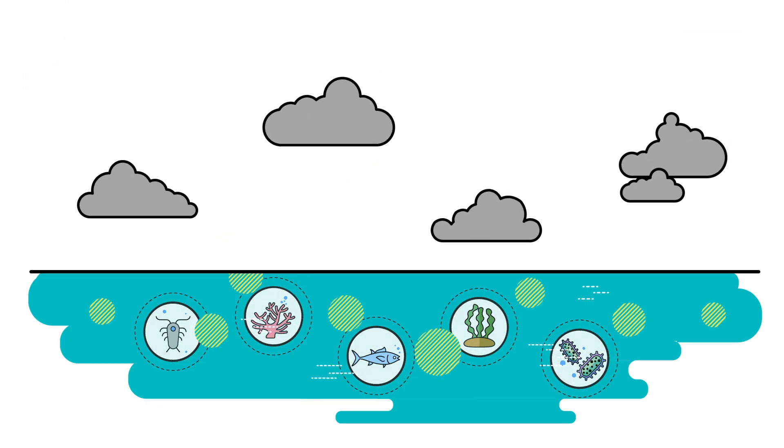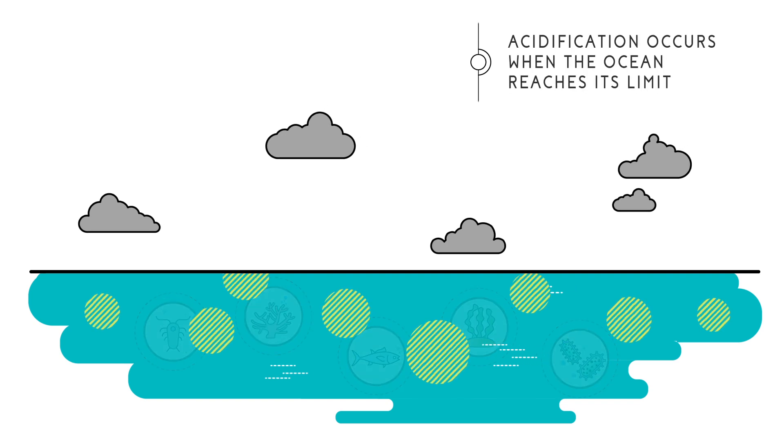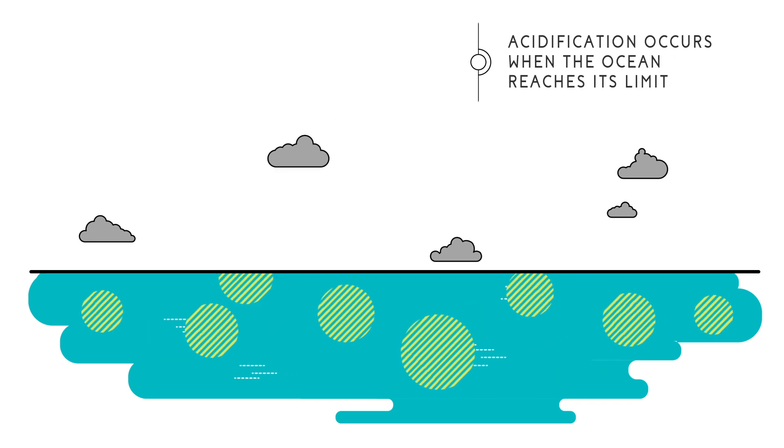The problem with natural carbon sinks is that they have a maximum limit, causing ocean acidification when exceeded.